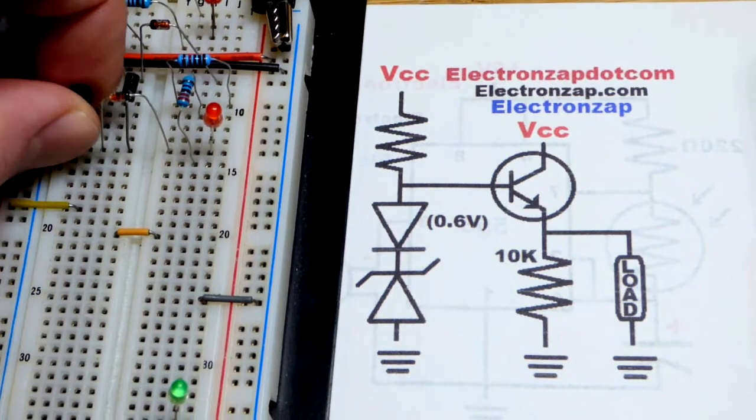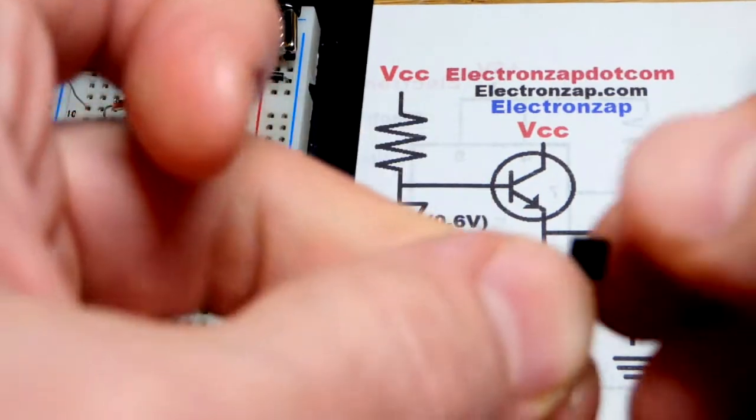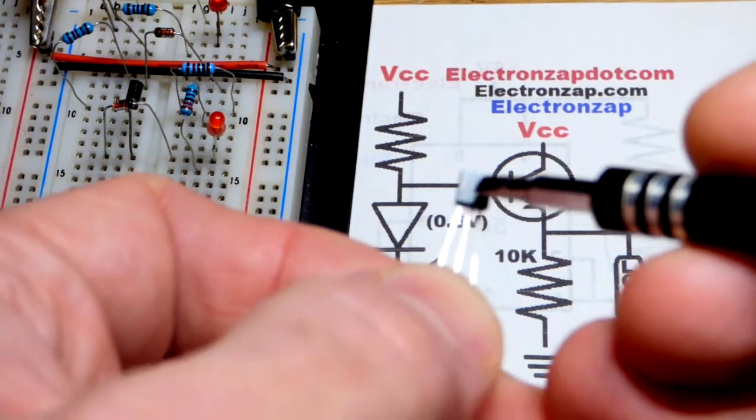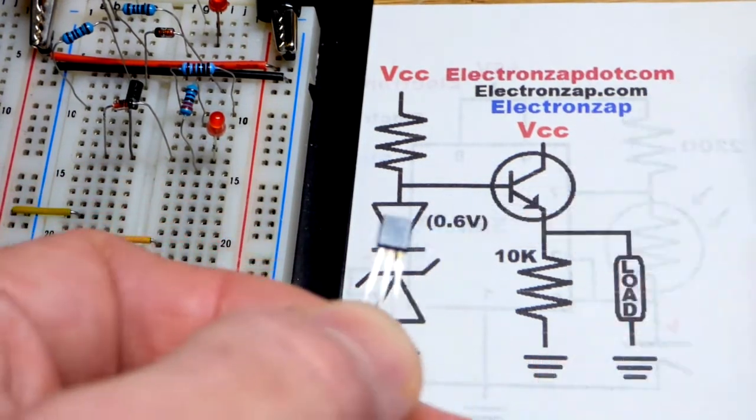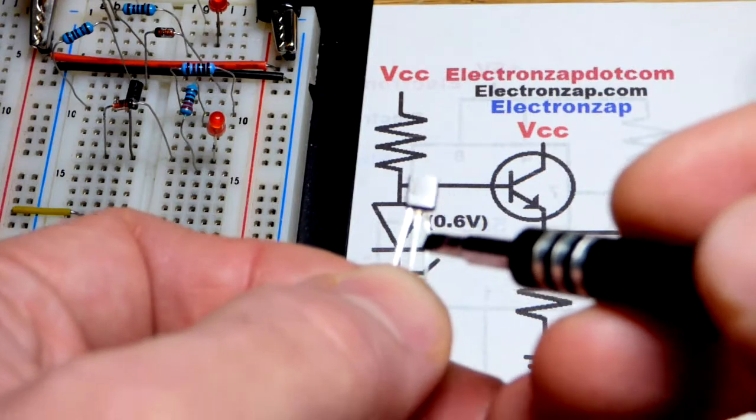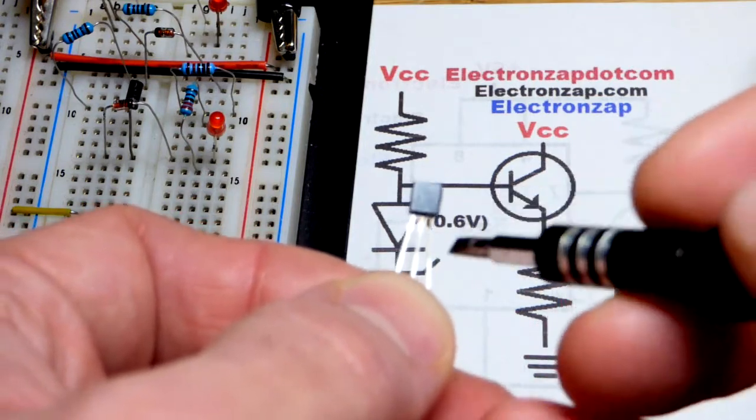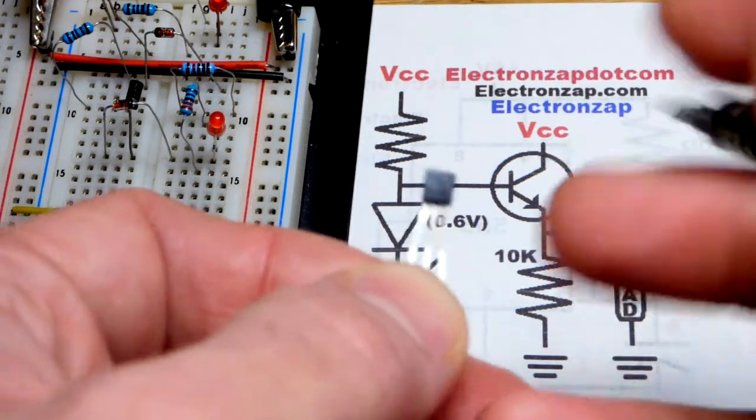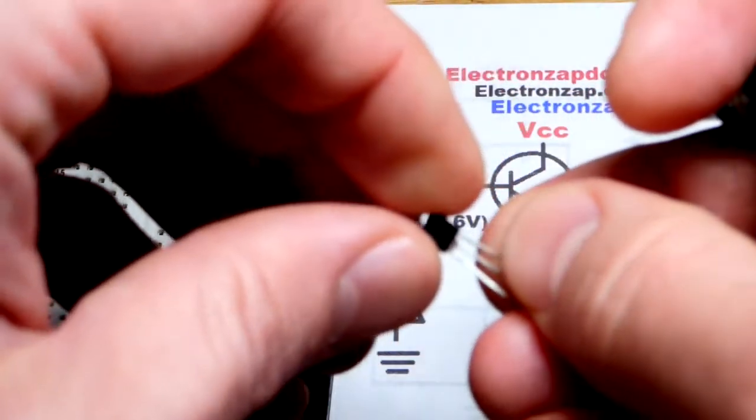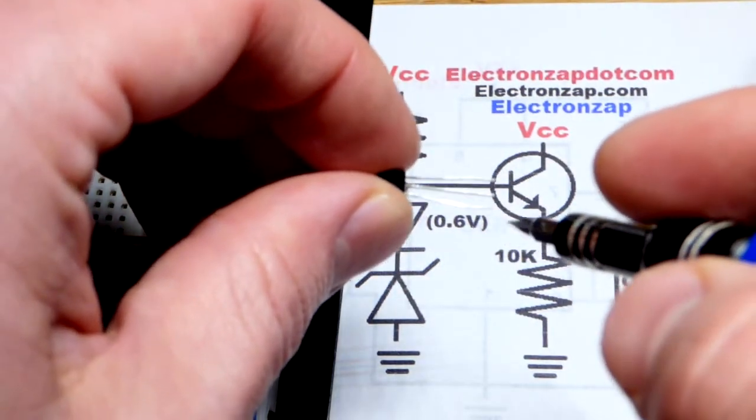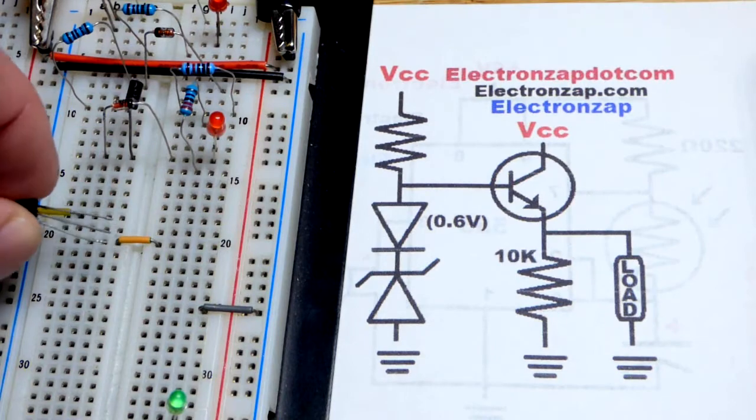So now the component that ties everything together is the NPN bipolar junction transistor. This is a 2N3904. Part number's on there, but it's hard to read. We have the emitter left pin, base is the middle pin, and then collector is the top pin. That's the pin layout for this particular transistor. So if we turn it this way, now the emitter's at the bottom, collector on top, base in the middle.